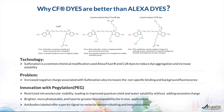At Biotium, near IR dyes offer important advantages over traditional visible light dyes due to their excellent specificity, sensitivity and linearity. Similar to Alexa Fluor, they also suffer from the same sulfonation limitations. Biotium chemists have solved this problem with the help of pegylation. These near IR CF dyes have restricted intramolecular mobility, leading to improved quantum yield and water solubility without adding excessive charge. As a result, near IR CF dyes are brighter, more photostable and have far greater biocompatibility for in vivo applications than any other IR dyes.